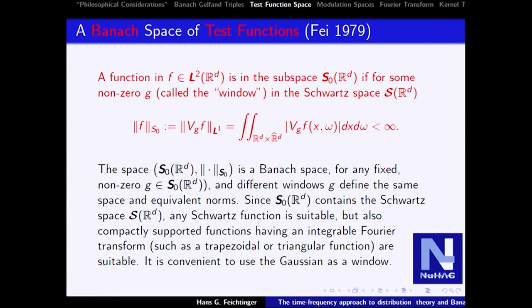The short-time Fourier transform with the Gaussian is a good candidate because you have already computed this Fourier-invariant: this function is bounded, continuous, and square-integrable. Why is a bounded continuous function square-integrable? For example, 1/x is square-integrable from 1 to infinity: it doesn't decay well enough, but if you square it the small values get even smaller and by squaring it will be small enough. By contrast, 1/x is not integrable.